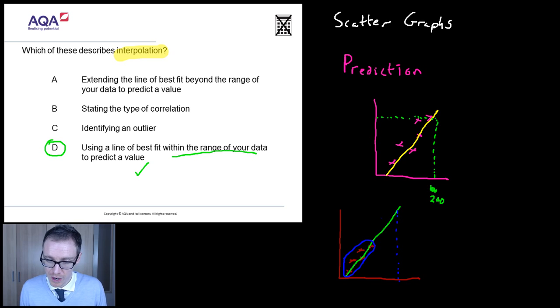Because who's to say whether this straight line pattern continues? It could go off all over the show up here. So, whenever you're predicting something outside the range of your data, what you're doing is extrapolating.